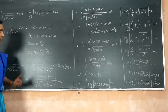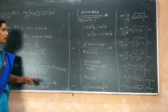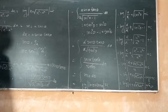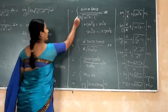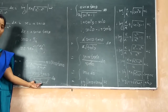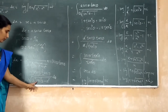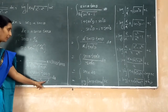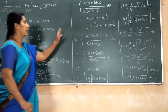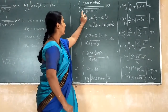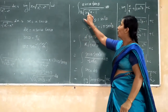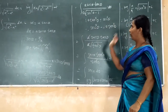Let us simplify this term. We take out a squared from under the root, giving us a squared·(sec squared θ minus 1). Taking a squared outside the root, the term becomes a times the square root of sec squared θ minus 1.